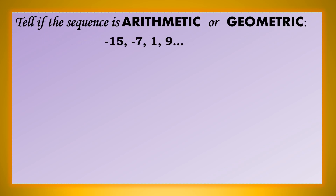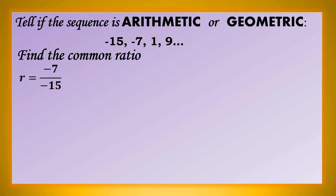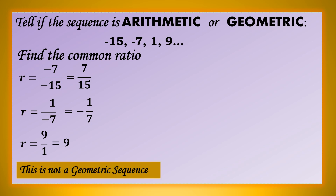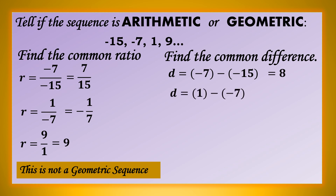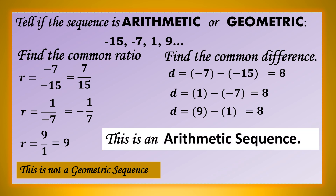Next. Given: negative 15, negative 7, 1, 9, and so on. Find the common ratio. Negative 7 divided by negative 15 is positive 7 over 15. 1 divided by negative 7 is negative 1 over 7. 9 divided by 1 is positive 9. Iba-iba yung ratio nila, so there is no common ratio — this is not a geometric sequence. Let us find the common difference: negative 7 minus negative 15 is 8, 1 minus negative 7 is 8, 9 minus 1 is 8. There is a common difference. Therefore, this is an arithmetic sequence.